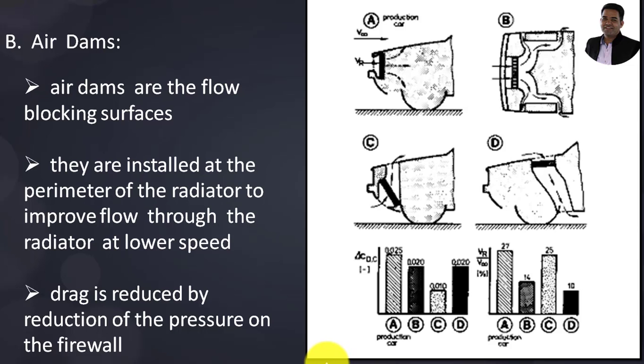The next one is air dams. Air dams are flow-blocking surfaces installed at the perimeter of the radiator to improve airflow through the radiator at low speed. At low speed, the radiator requires a specific mass flow rate of air to cool down the coolant circulating in the channels. When airflow is minimal, air dams help improve flow through the radiator.